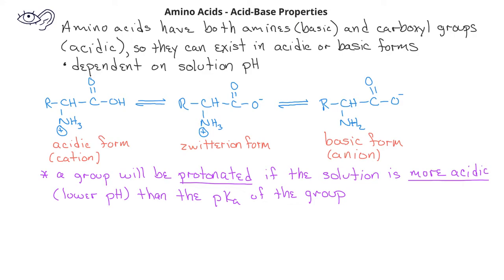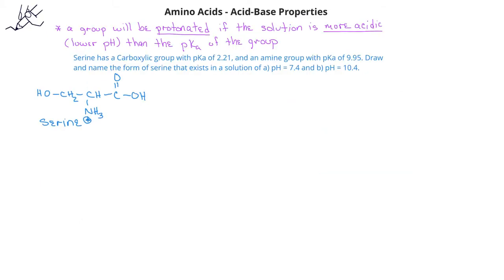Another interesting thing to note is that all three forms of amino acids are charged. In other words, amino acids act much like ionic compounds more than they do molecular compounds. Let's look at an example using the amino acid serine.